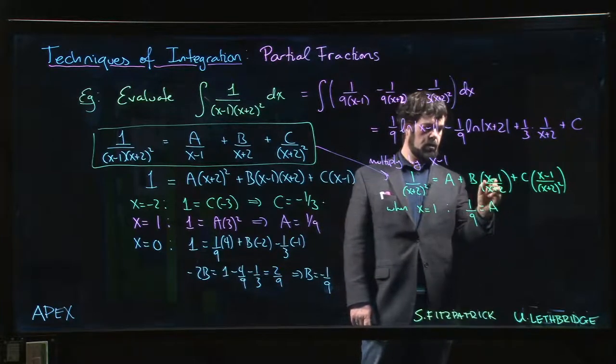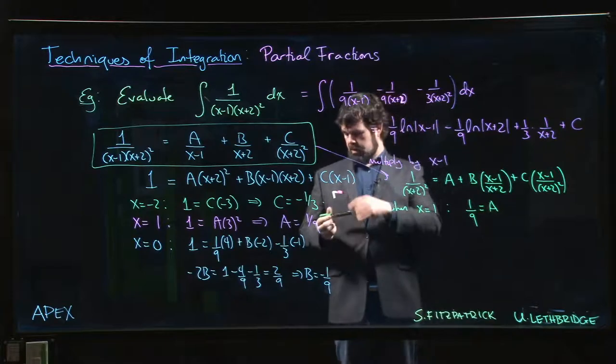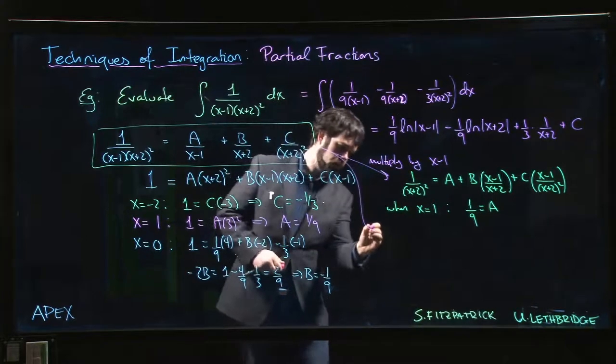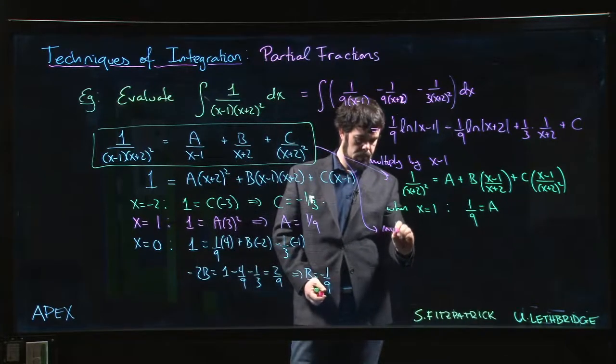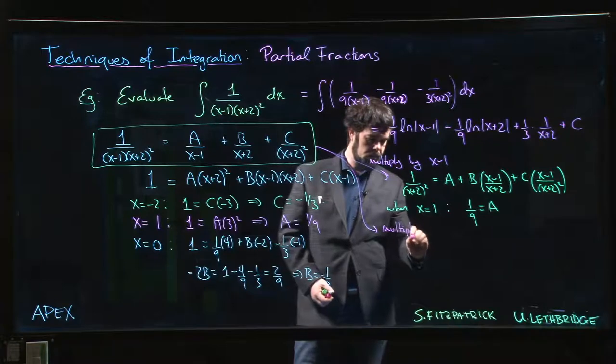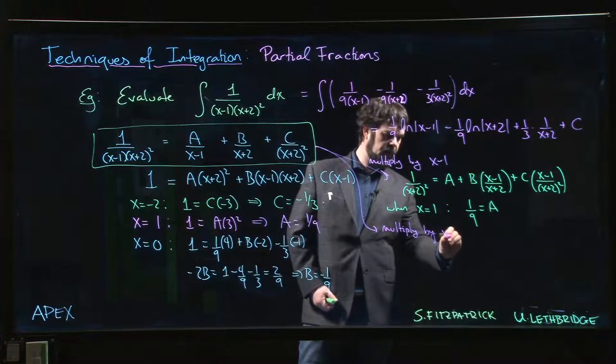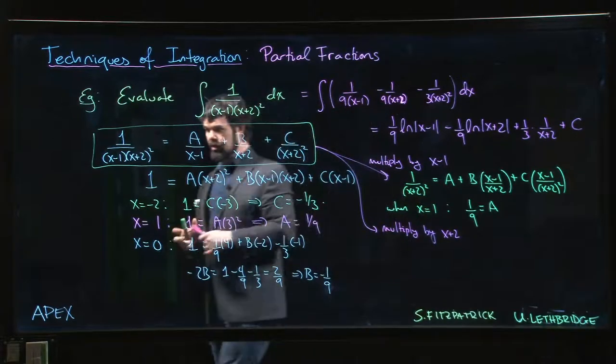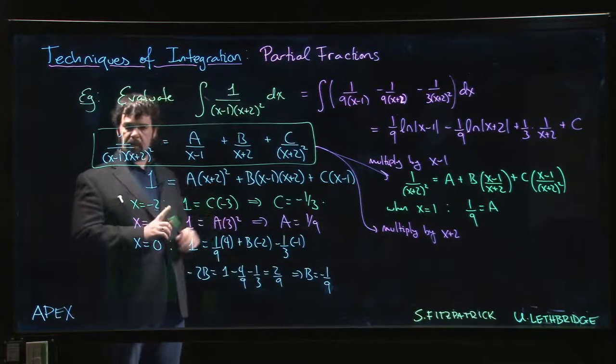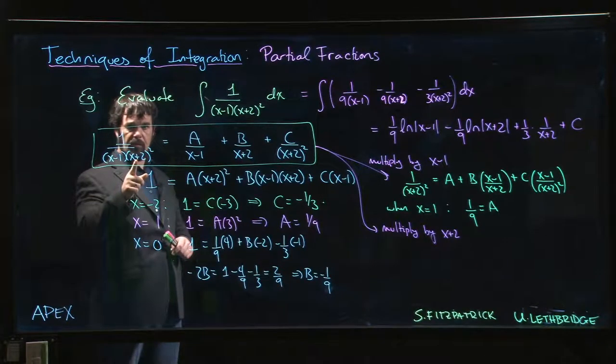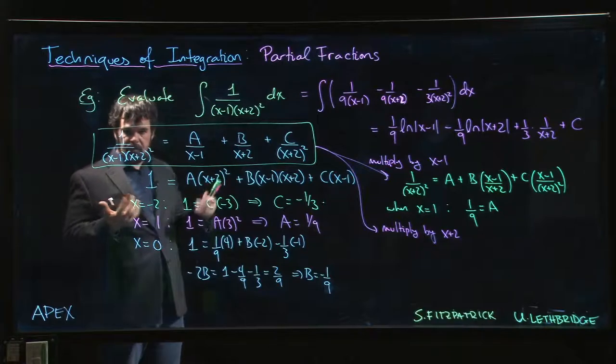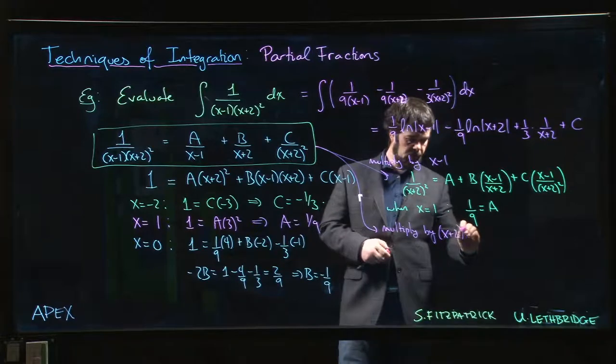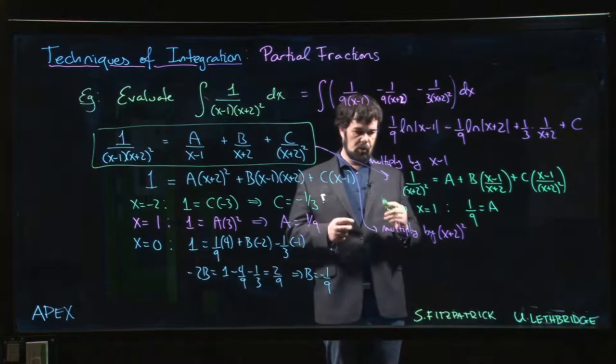Got it. Then we might try... what if I multiply by x plus 2? Well, multiplying both sides by x plus 2 doesn't quite do the job because I'm still going to have an x plus 2 here. If I want to evaluate at minus 2, I'll still run into trouble. So actually what I want to do is multiply by this square - I multiply both sides by (x+2)^2.